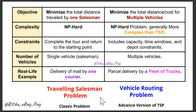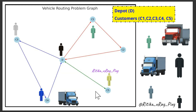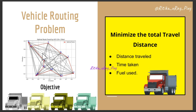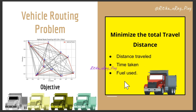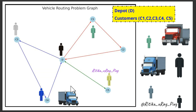The Vehicle Routing Problem is an advanced version of the Traveling Salesman Problem. In TSP, a single salesperson visits all cities once and returns to the starting point, whereas in VRP it involves multiple vehicles serving customers from a depot. Key features of VRP include: multiple vehicles starting and ending at a central depot; each customer must be visited exactly once by only one vehicle; and the objective is to minimize cost — meaning minimizing distance, time, and fuel consumption — finding optimal routes for all vehicles so all customers are served at minimal total cost.